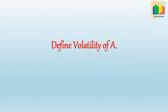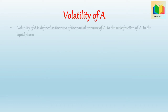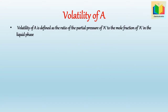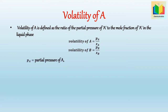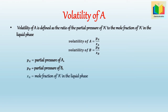Define volatility of A. The volatility of A is defined as the ratio of the partial pressure of A to the mole fraction of A in the liquid phase. The formula for volatility can be written as: volatility of A = pA / xA. Similarly, volatility of B = pB / xB, where pA is the partial pressure of A, pB is the partial pressure of B, xA is the mole fraction of A in the liquid phase, and xB is the mole fraction of B in the liquid phase.